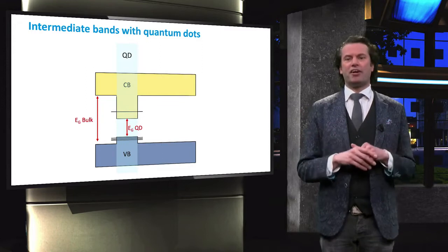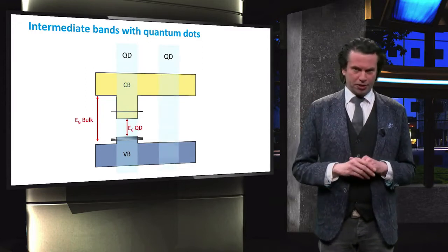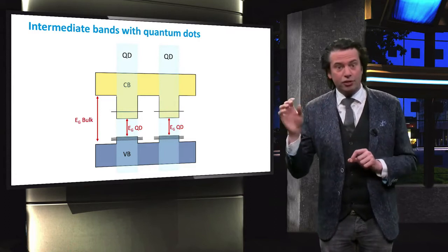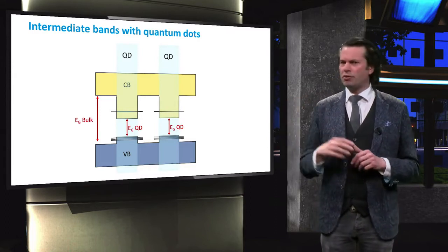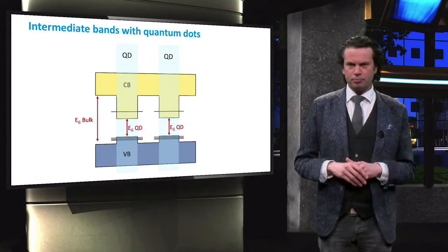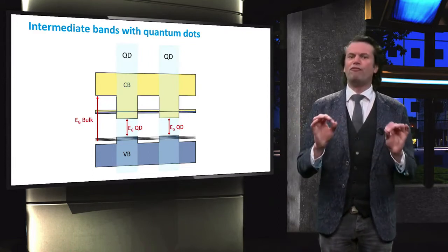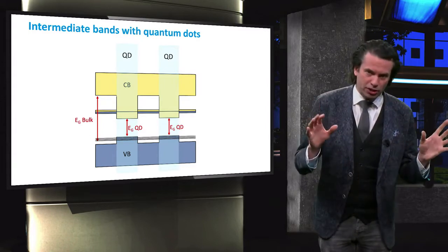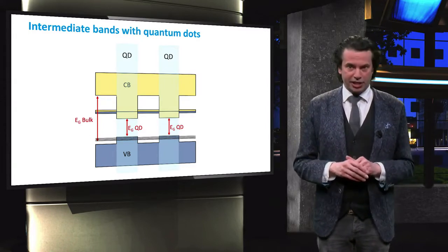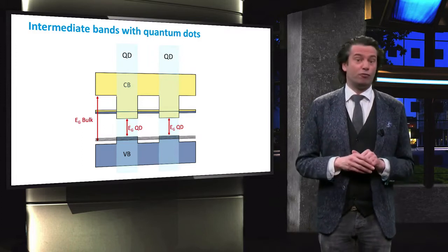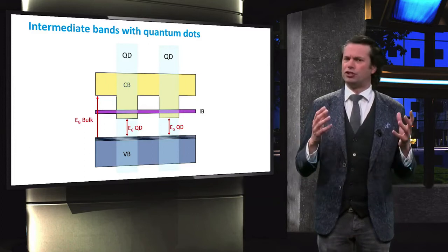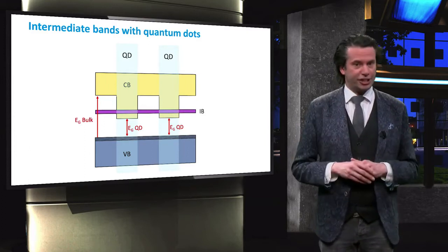Let's extend the band diagram of the bulk material and position a second quantum dot near the first one. This quantum dot will also create energy states in the bandgap. If enough quantum dots are integrated in the material, continuous bands of allowed energy states are formed in the bandgap of the bulk material. As a result, the band structure of the semiconductor is effectively changed.